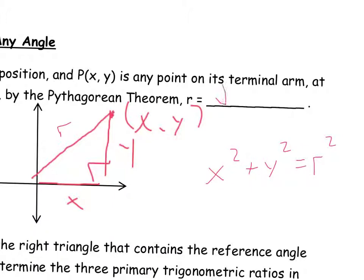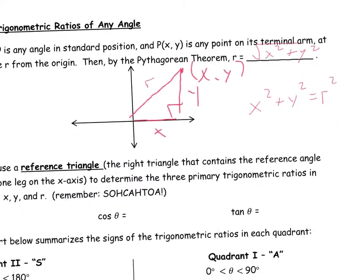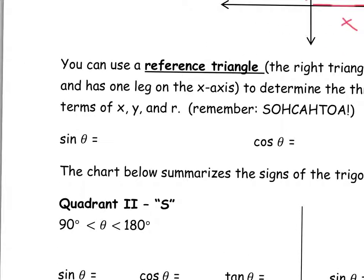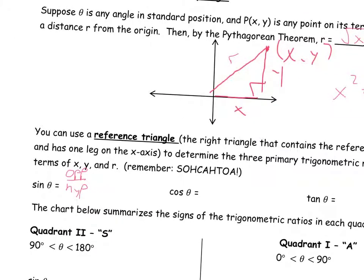If we just wanted R alone, it would be the square root of X squared plus Y squared. Now let's look at the triangle and think about our three trig ratios. Sine is opposite over hypotenuse. According to the angle we've created, the opposite side is Y, and the hypotenuse is R. So sine theta equals Y over R — a very important idea.